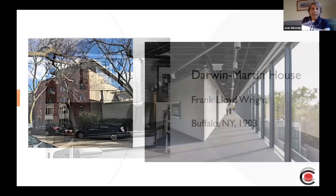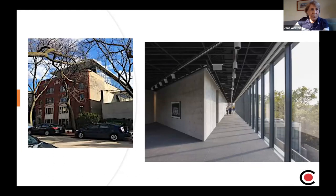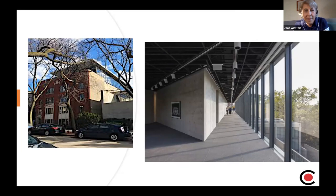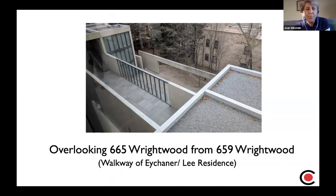Going back to look at the top floor of Wrightwood 659 — that was an additional design added by Ando. It gives this glassed-in wall and provides more exhibit space, but also allows people to look out on the tree canopy of Lincoln Park and connect to nature — very much a Frank Lloyd Wright feature. And as a bonus, you get to look down on 665 Wrightwood, the Eichainer House, and see its construction and gardens. You can see the two cubes connected by that walkway and how integral that walkway is to the design.